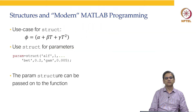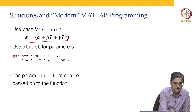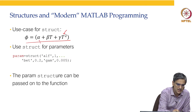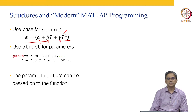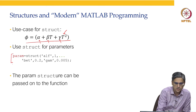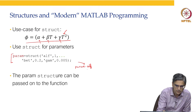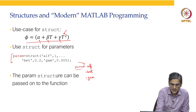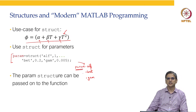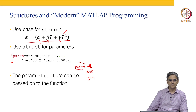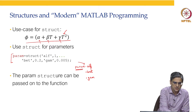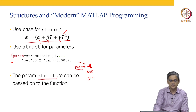How are structures used in what I am calling modern MATLAB programming? One use case is when we have a function where the variable is temperature and the parameters are alpha, beta, and gamma. In that case, you can define the parameters as a parameter structure: param.ALF, param.BET, and param.GAM as three fields. The param structure can then be passed on to the function.